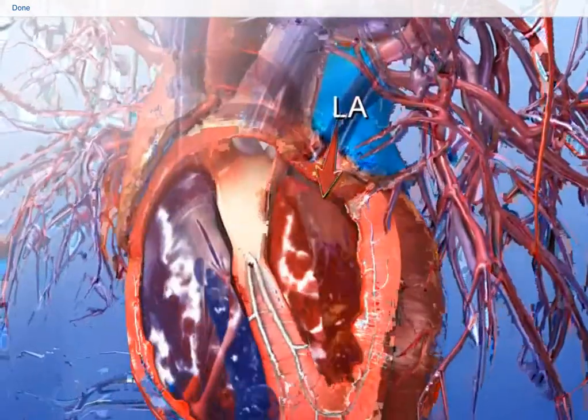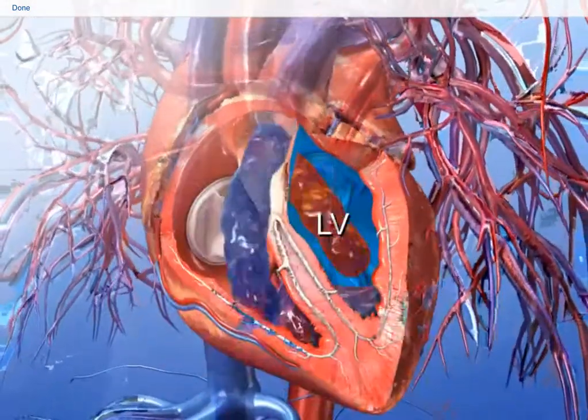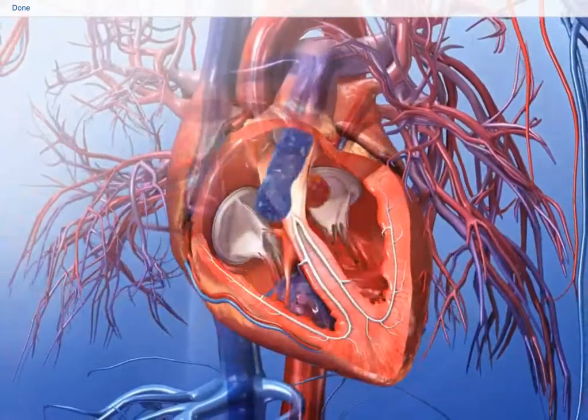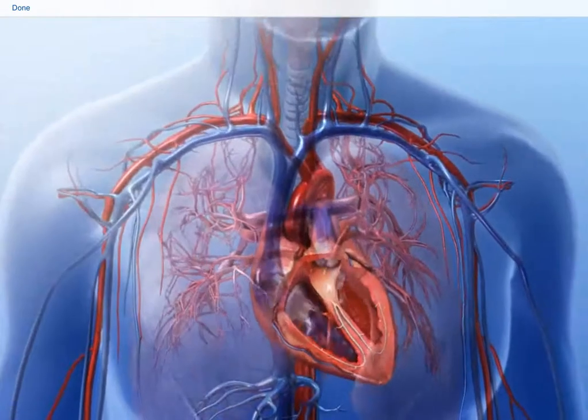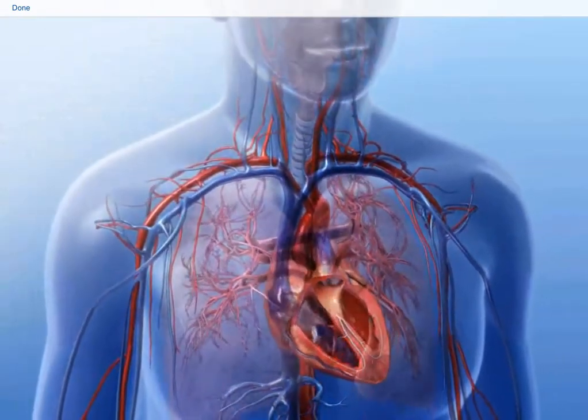Oxygenated blood from the lungs enters the left atrium and empties into the left ventricle. From there, it flows out of the heart into the arteries of systemic circulation to distribute oxygen throughout the body.